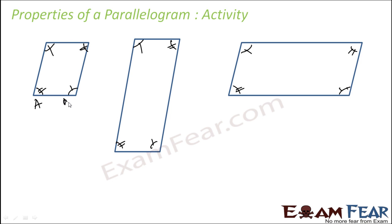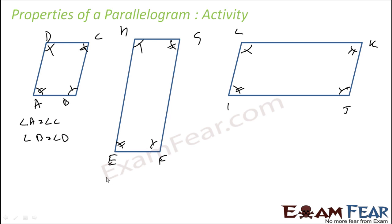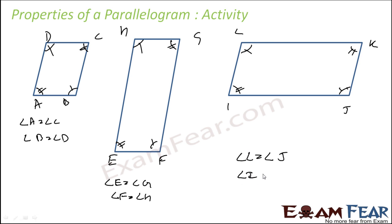So if you name the vertices A, B, C, D, E, F, G, H, I, J, K, L — in the first parallelogram angle A will be equal to angle C, and angle B will be equal to angle D. In the second, angle E is equal to angle G, and angle F will be equal to angle H. Angle L will be equal to angle J, and angle I will be equal to angle K. This is the observation — you can take a piece of paper, draw different parallelograms, and you will observe that the opposite angles are equal.